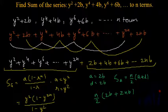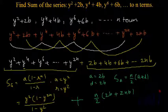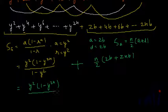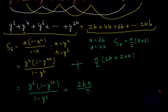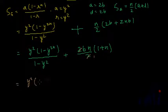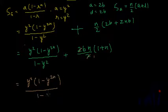The sum of the total series will be the GP sum plus the AP sum. It will be y squared multiplied by 1 minus y to the power 2n, divided by 1 minus y squared, plus — from the AP part we can take 2b common, giving 2b times n by 2 multiplied by 1 plus n. The 2 cancels, giving the final result: y squared times 1 minus y to the power 2n, divided by 1 minus y squared, plus nb multiplied by n plus 1.